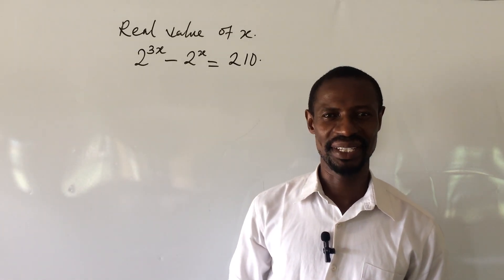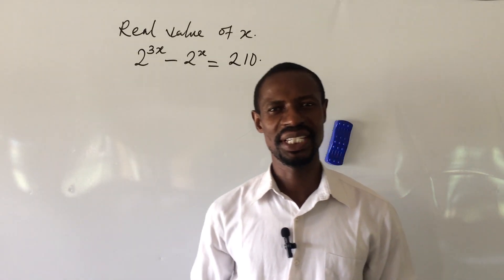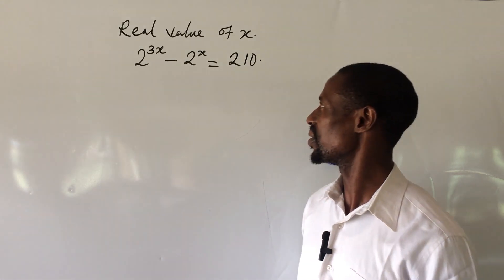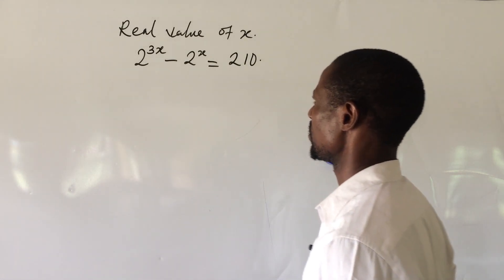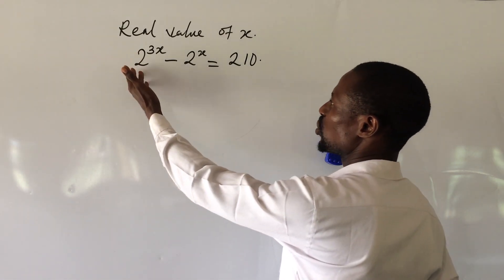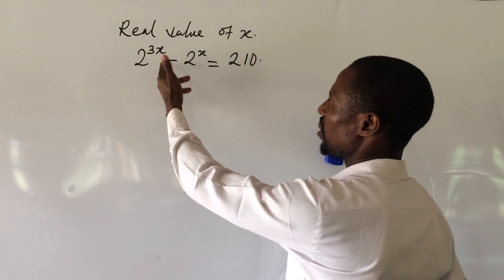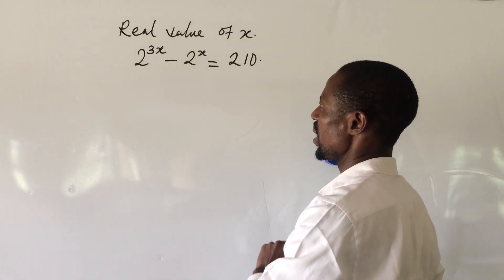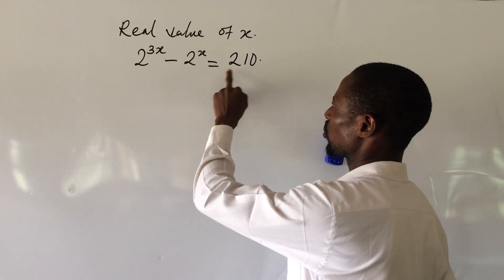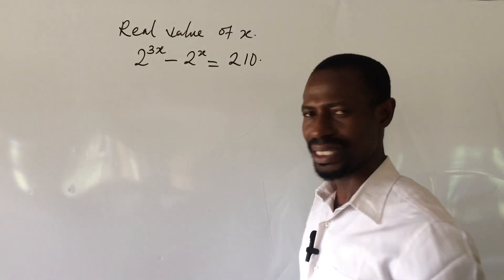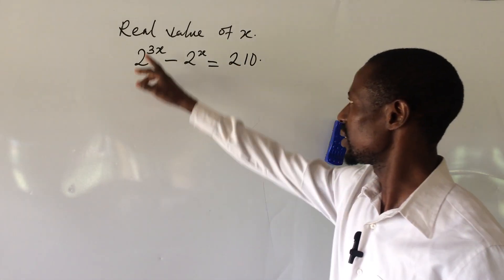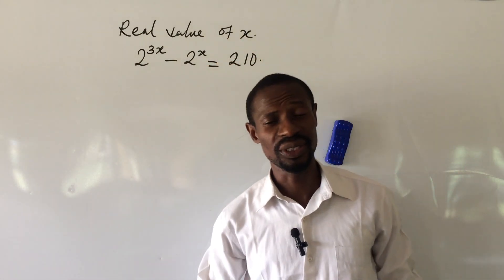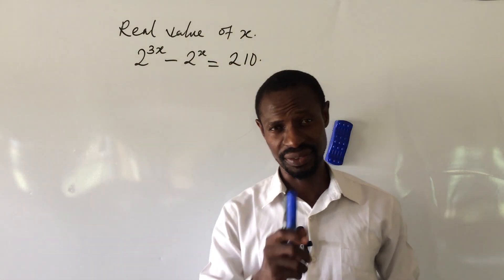Welcome to Online Math TV. My name is Jake. We have a challenge on the board. The question reads: 2 to the power of 3x minus 2 to the power of x equals 210. What will be the real value of x?